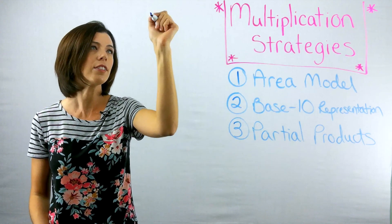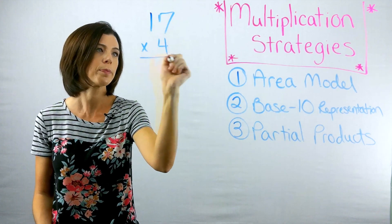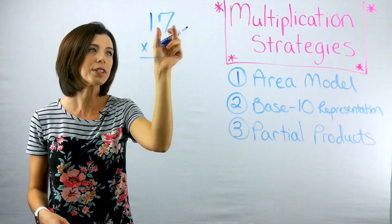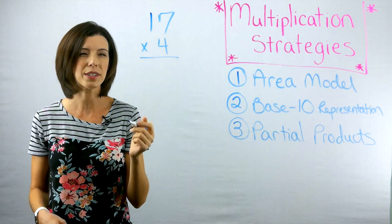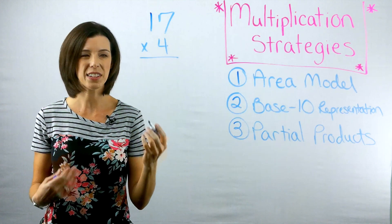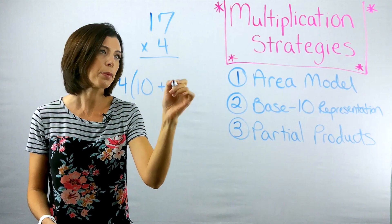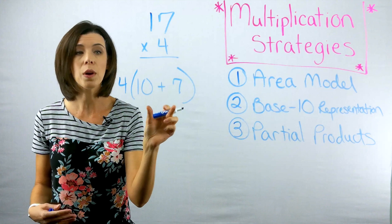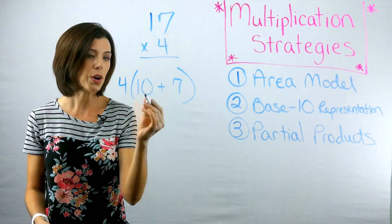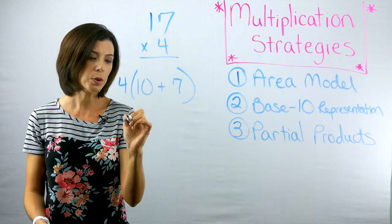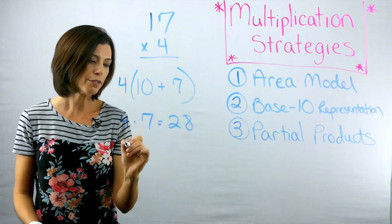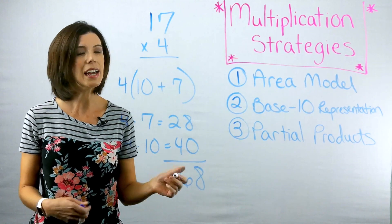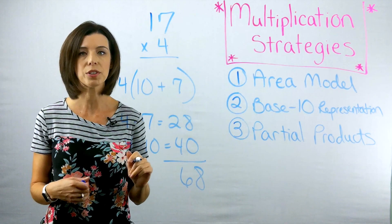Let's say that we have 17 times four. The partial products method says that we know that we can do this four times a seven, but also four times a 10. You can also think of this like the distributive property. So we're really breaking up that 17 into decomposing it into two other addends. So I know that I would have four times seven, which is 28, and four times 10, which is 40 to get the number 68. Again, partial products very similar to the area model.